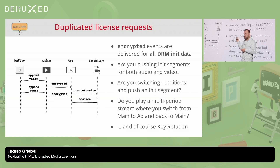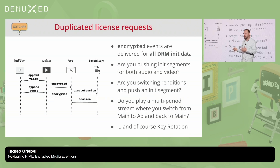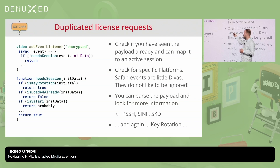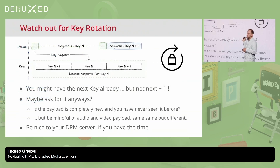According to spec, the encrypted event fires every time DRM initialization data is encountered when you push data into your buffers, and you get all DRM init data found — not just for your DRM system. So be careful about triggering unnecessary license requests if you already have the key. A typical scenario: you push a video init segment and an audio init segment that use the same key, but you get two encrypted events — you only need to handle one. In code, on the encrypted event you need a check: do I actually need a session for this? Key rotation is one case to handle; Safari is a special case — its encrypted events don't like to be rejected, so just send them downstream and everything will be fine.